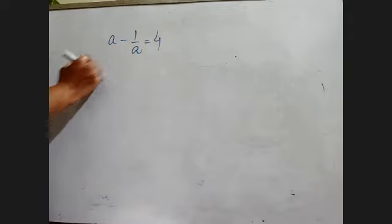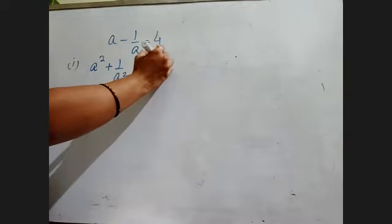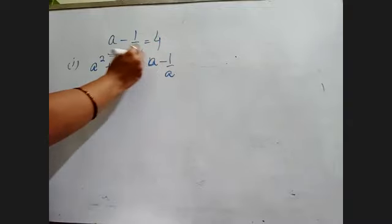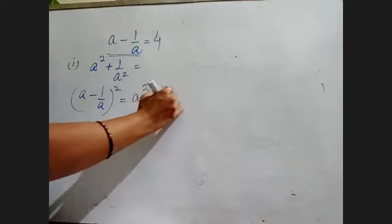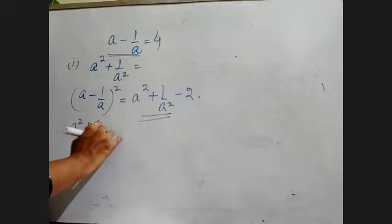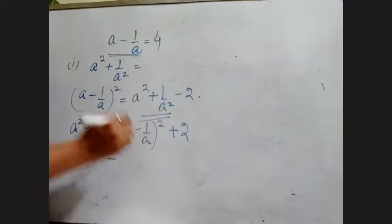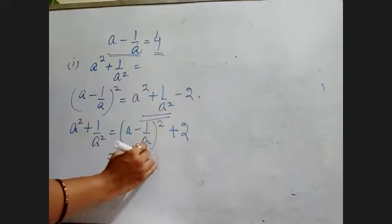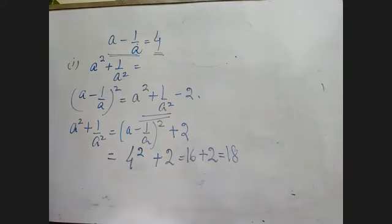Now you are given a - 1/a is equal to 4. First bit: find a² + 1/a². What is the value of this thing? How will you do it? Directly, a - 1/a, I have its value. So what will I do? (a - 1/a)² has the formula: a² + 1/a² - 2. Now I have to find this value. So a² + 1/a² = (a - 1/a)² + 2. a - 1/a is 4, so 4² + 2 = 16 + 2 = 18. So I got a² + 1/a² value, which is 18.